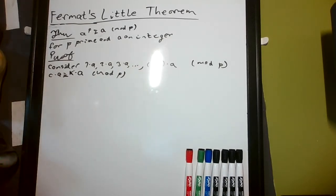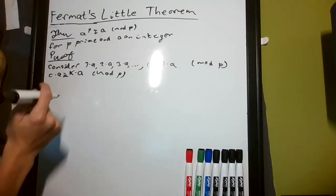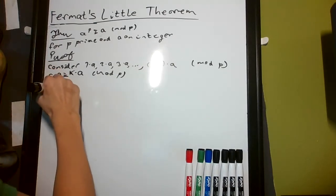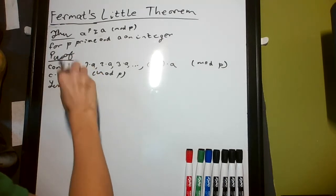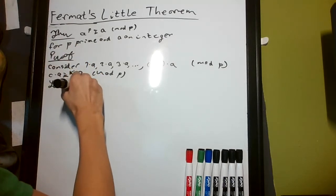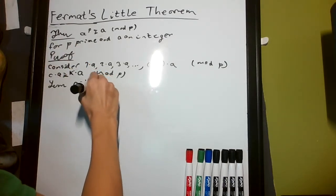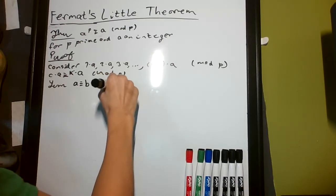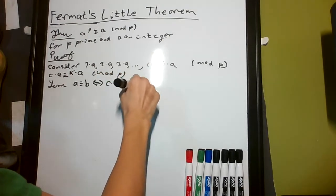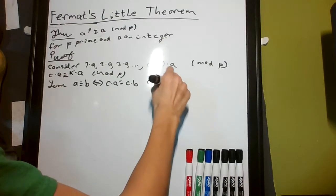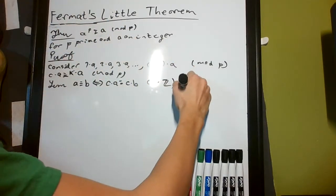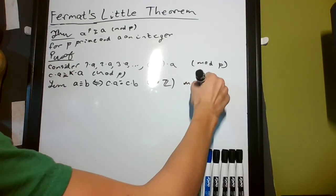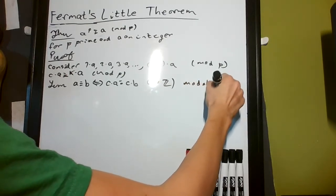What would this mean? There's a lemma I won't prove here: a is congruent to b if and only if c times a is congruent to c times b, for c an element of the integers, for modulo prime at least, because that's what we're dealing with here.